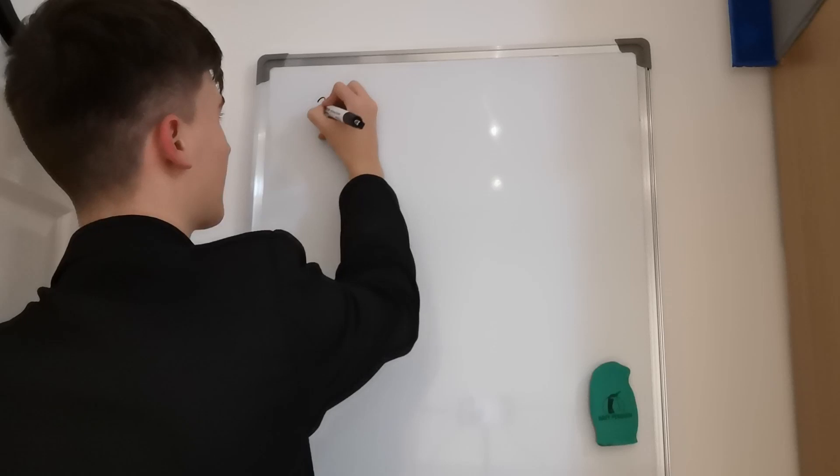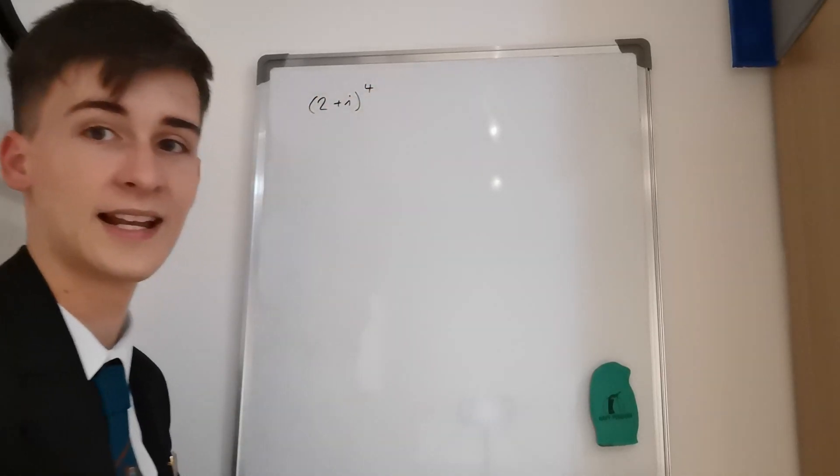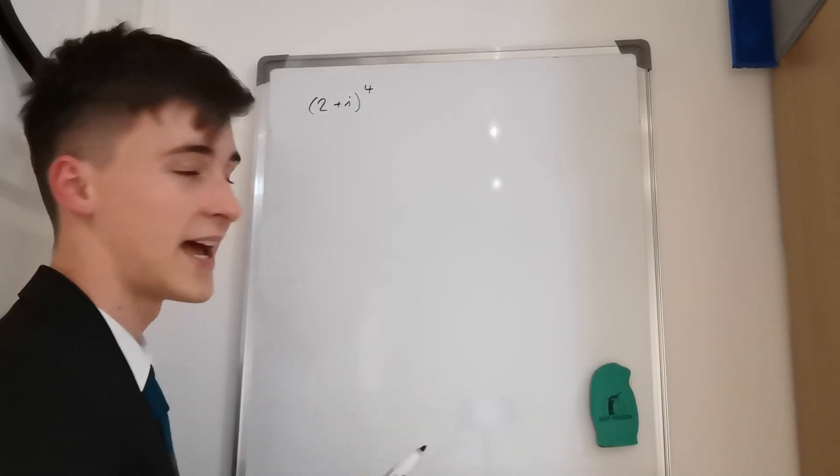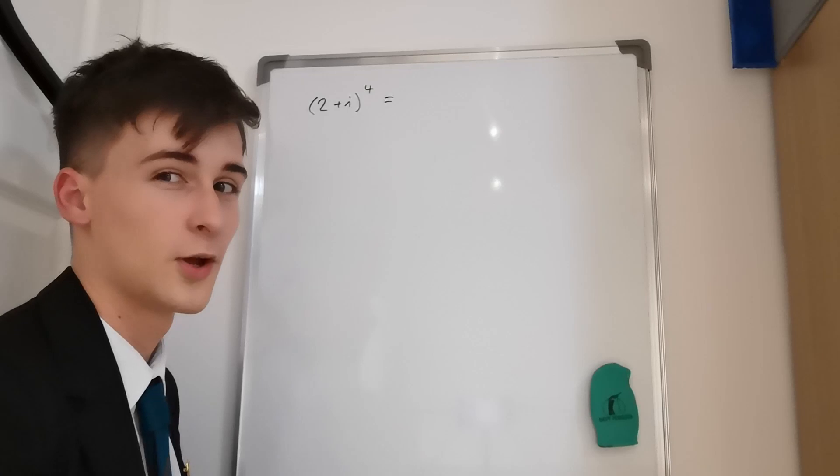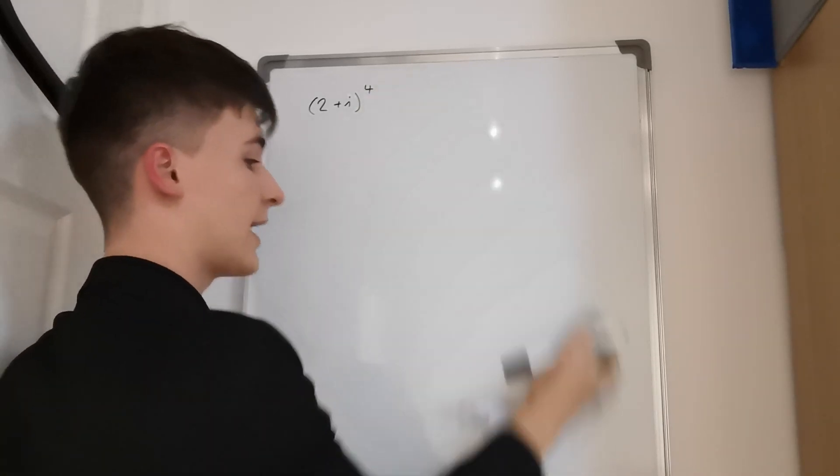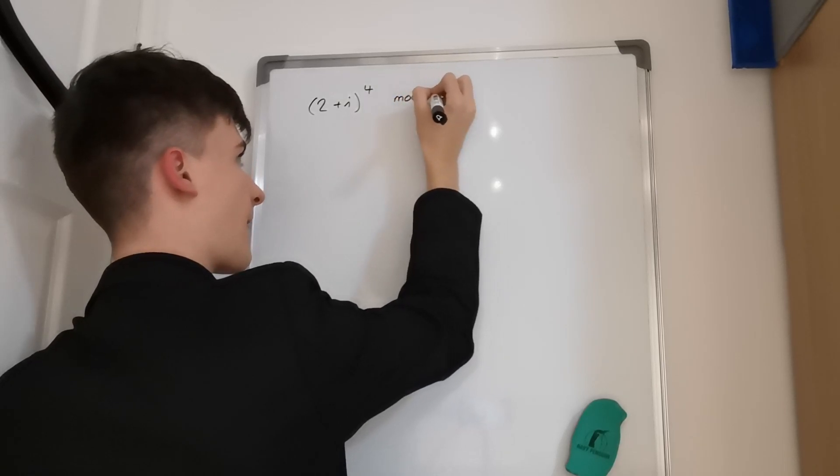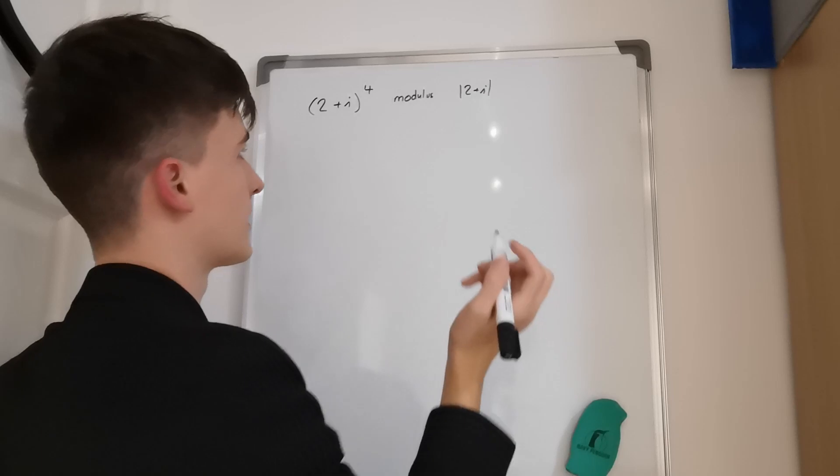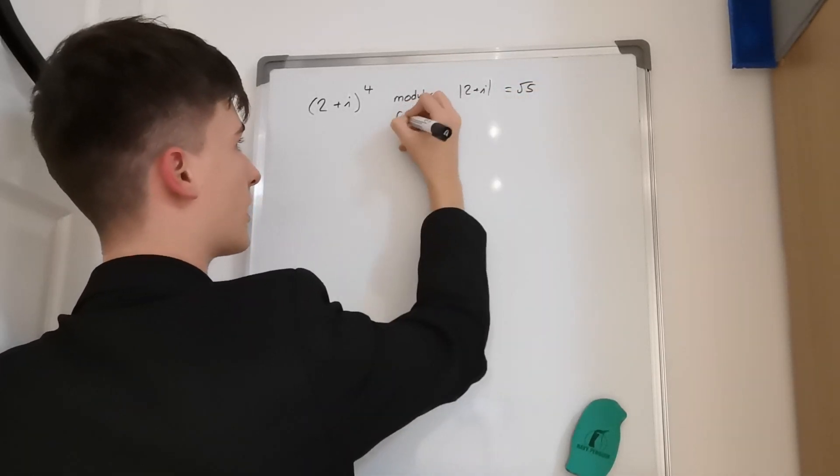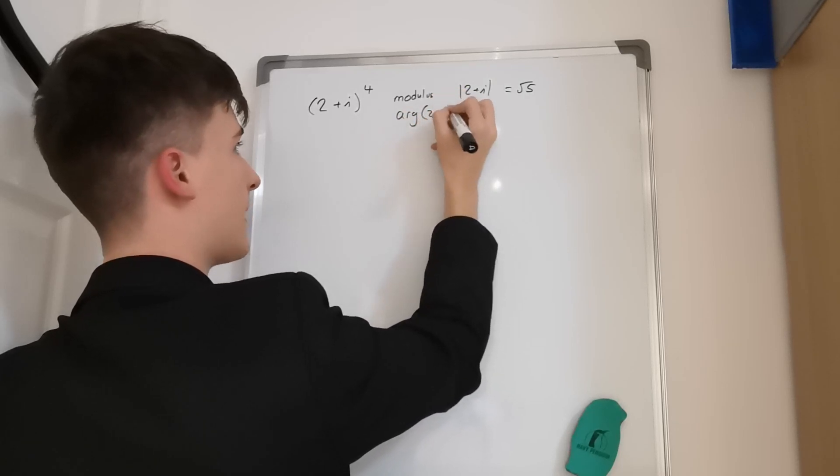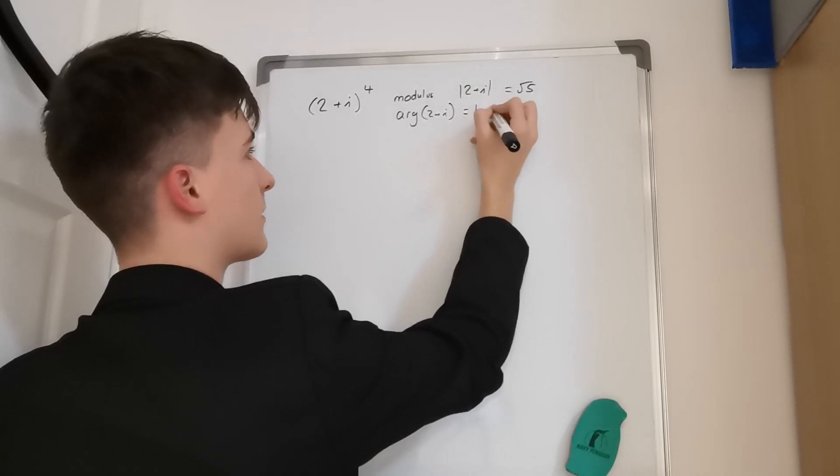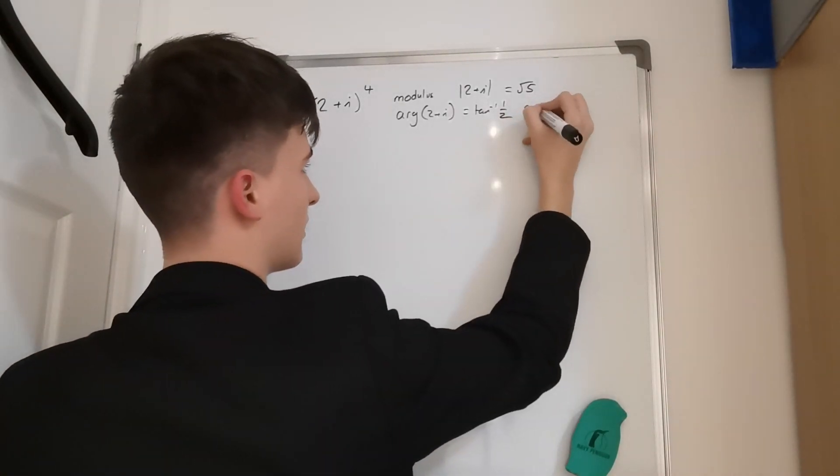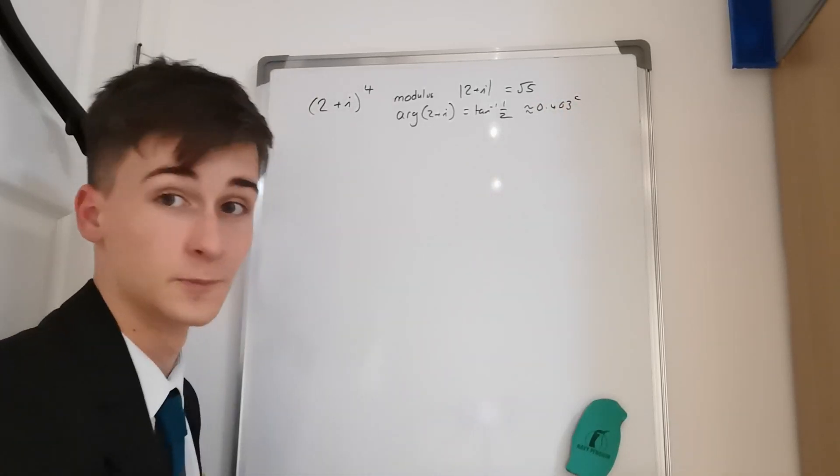Part A or part one was pretty simple. It was (2+i) to the power of 4 and it literally just said solve. So we were able to work out that (2+i)^4 is equal to... we're going to work out the modulus which is |2+i| which is equal to √(2²+1²) which is equal to √5. And then arg of (2+i) is going to be equal to tan^(-1) of a half. I'm actually just going to leave it like that for now. It's approximately equal to 0.463 if we're working in radians.